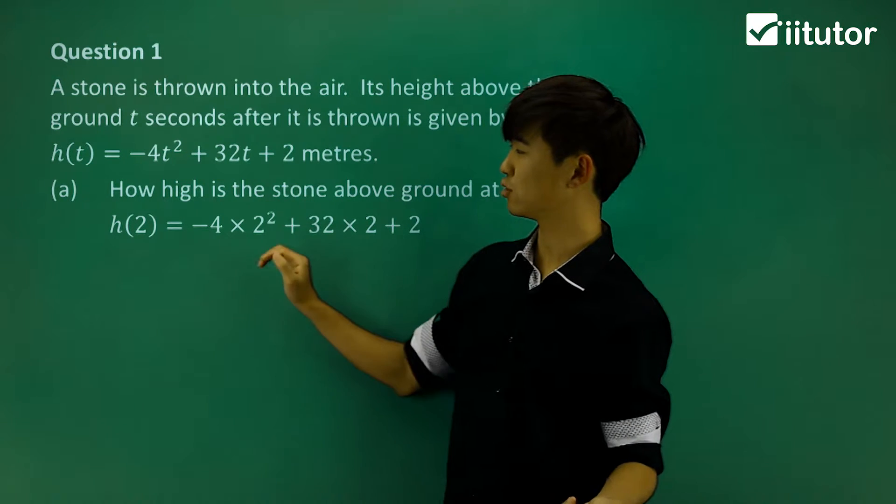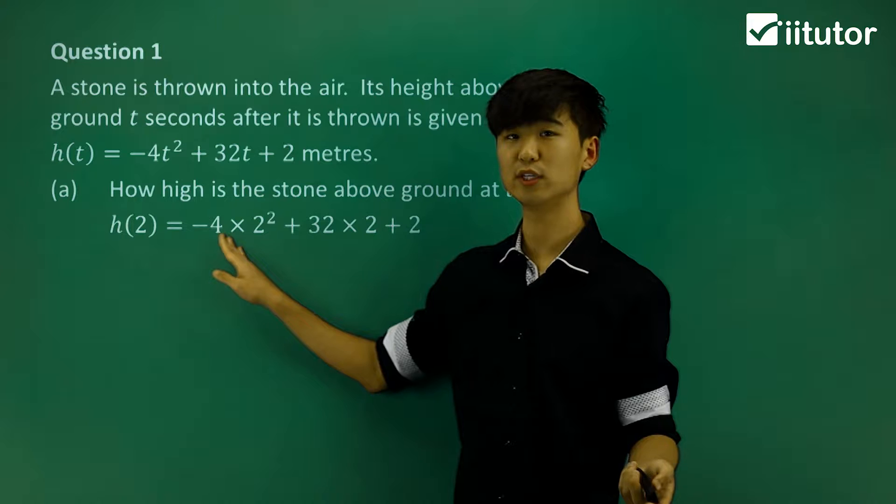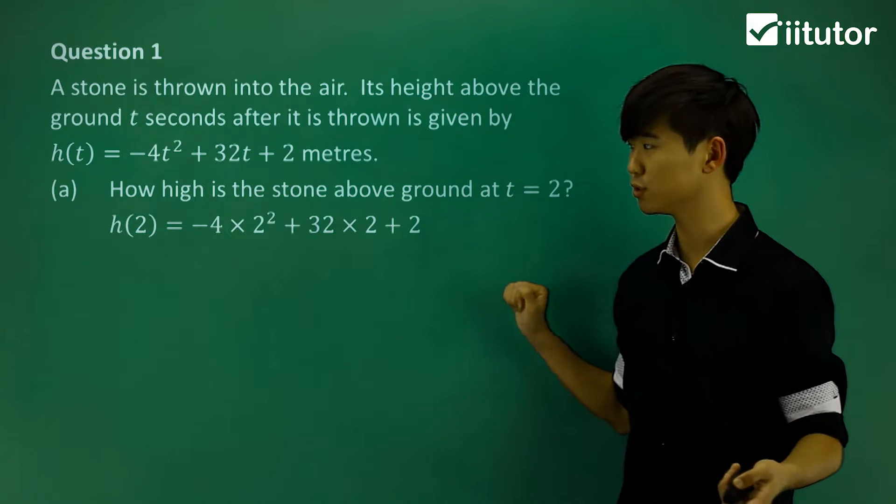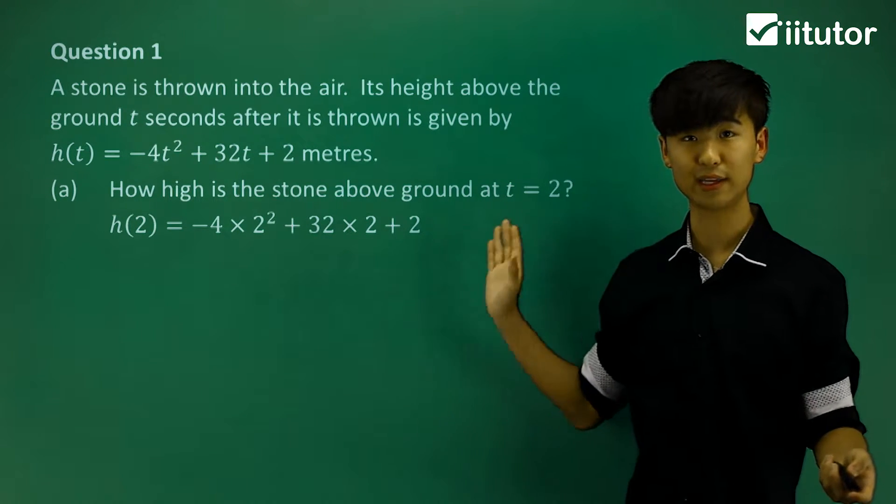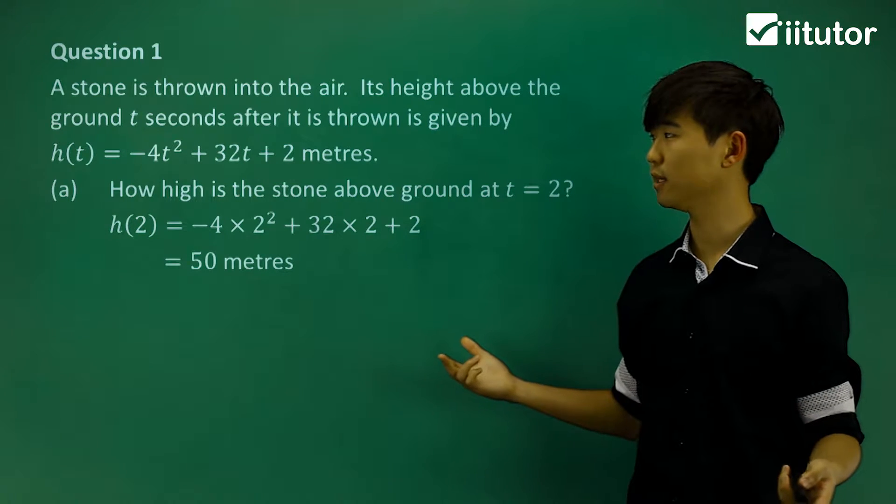If we substitute t = 2 into the quadratic and calculate this value, we get 15 meters high.